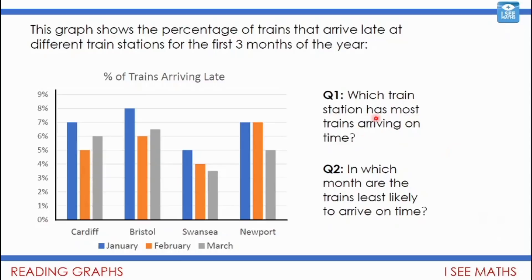For question one, we're looking for the station with the smallest bars — the fewest late trains — and it's Swansea, so the most trains must be arriving on time there. For question two, we want the month with the most late trains. It looks like January, where the blue bars tend to be the tallest on average — maybe because of the bad weather we get in January.